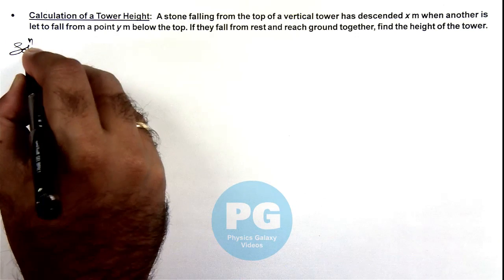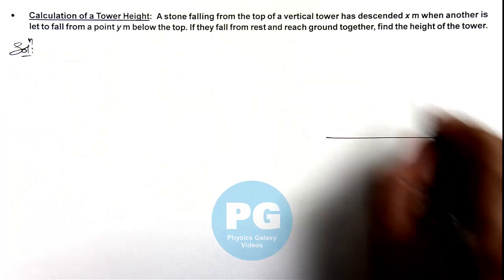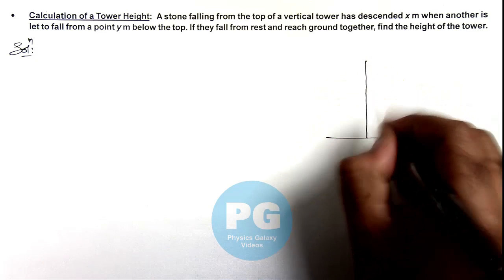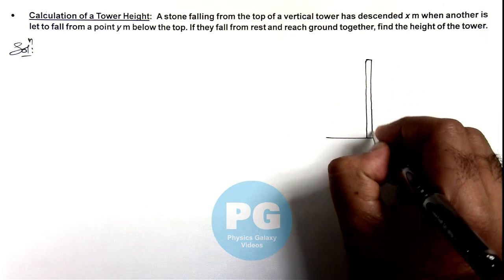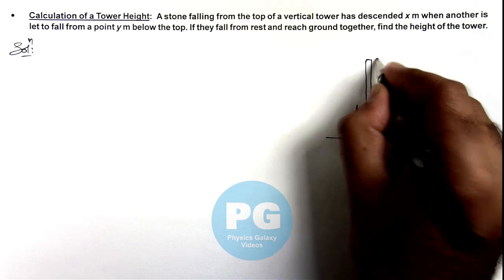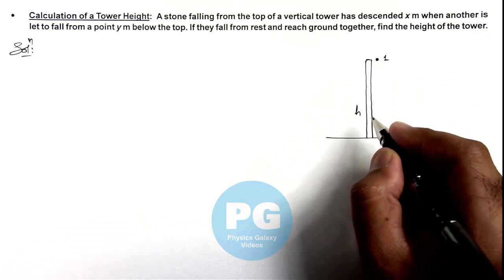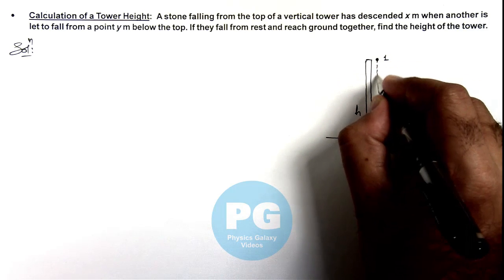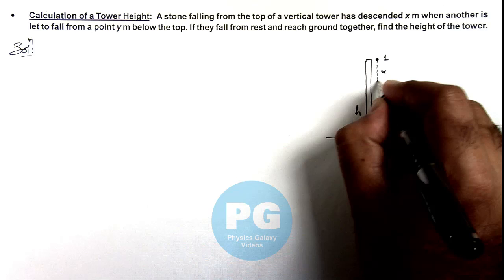Here, if we draw the picture, say this is a tower of height h, and stone 1 is dropped from the top. When it'll descend by a distance x meter.